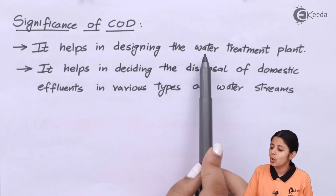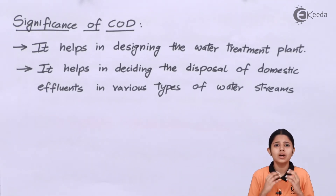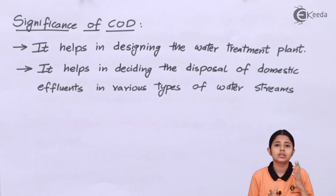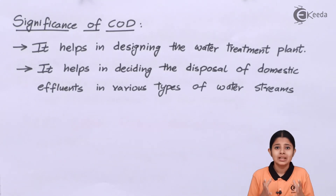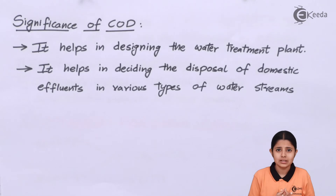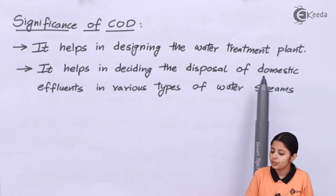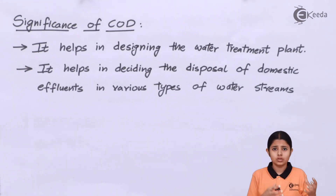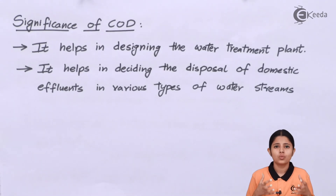Significance of COD: it helps in designing the water treatment plant. Industries calculate the COD of their waste and the amount of strong oxidizing agents present, then install a filtration or water cleaning plant to remove all strong oxidizing agents and organic matter, so waste discharged into rivers or streams will not deplete their oxygen content. It also helps in deciding the disposal of domestic effluents into various water streams and in reducing the amount of organic matter and strong oxidizing agents present in water.